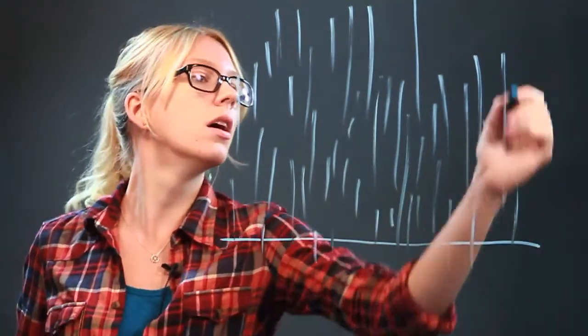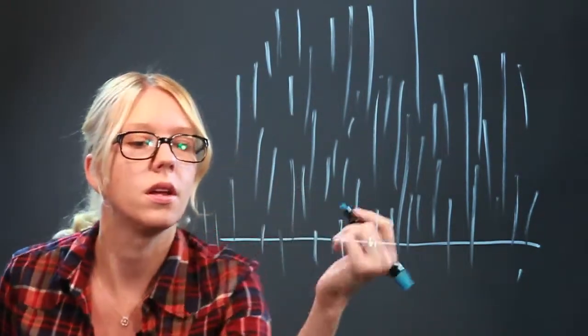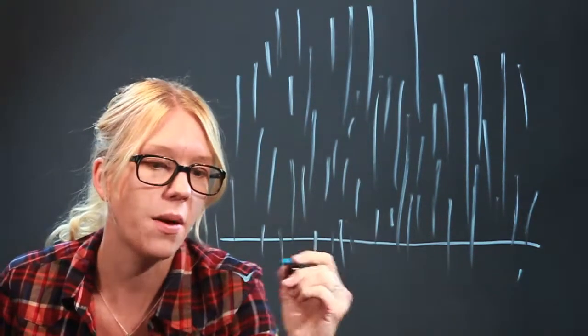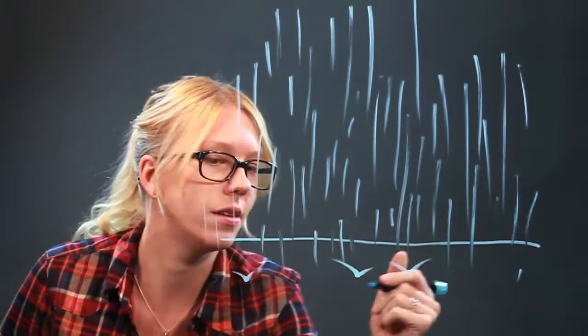So if we've got our rain coming down, now for the splashing, what we want to do is just draw little lines that come out like this. And do a little flick with your wrist.